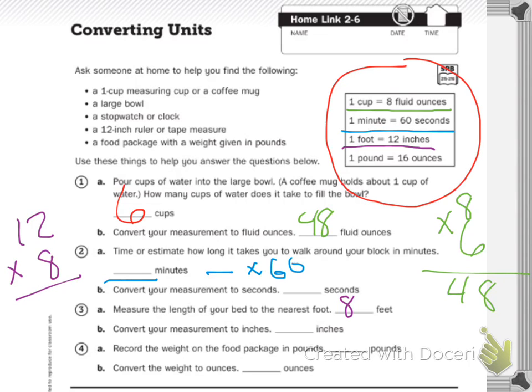So first, I multiply my ones: eight times two is 16. I put the six from 16 underneath my ones column and carry the one. Then I multiply my eight by the tens digit: eight times one is eight, plus one is nine. So my bed is about 96 inches.